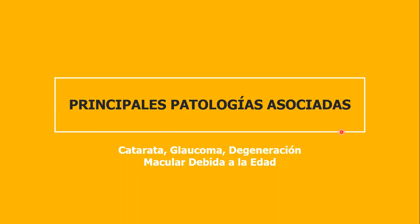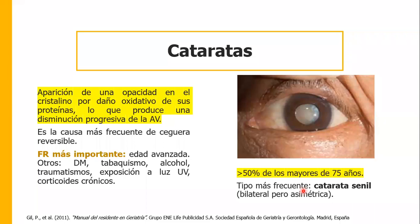Vamos a pasar a las patologías asociadas. Las cataratas: todos tenemos abuelitos con cataratas, incluso las mascotas las desarrollan por edad. Las proteínas del cristalino se conjuntan y forman esta opacidad, dado por un daño oxidativo de las mismas proteínas, lo que produce una disminución progresiva de la agudeza visual. Es la causa más frecuente de ceguera reversible y afortunadamente con cirugía se puede mejorar.